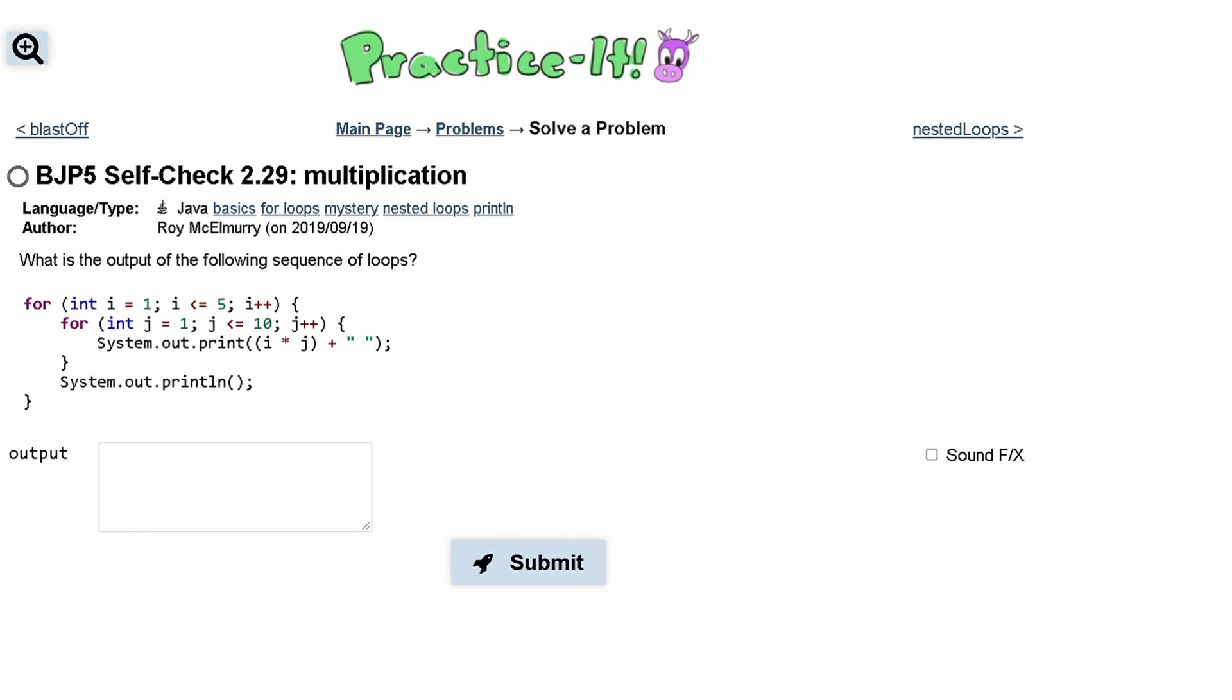Inside of our encased loop we have system.out.print i times j and then a space. After this loop breaks we have a print line right here as well.